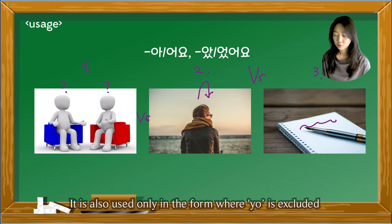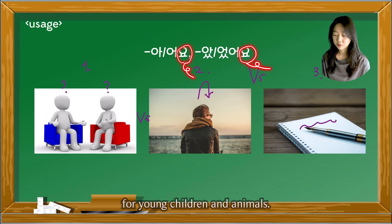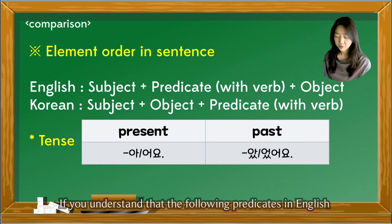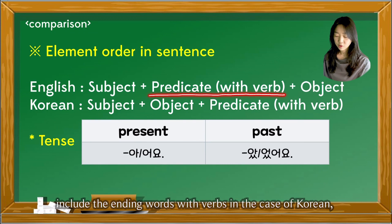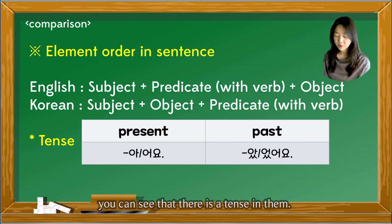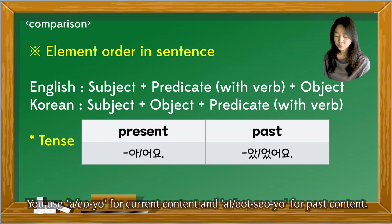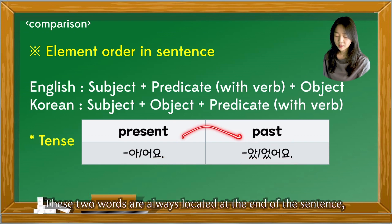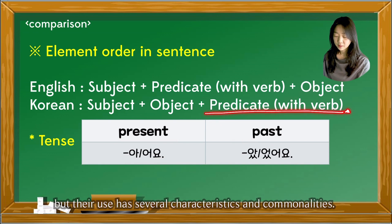It is also used in the form where 요 is excluded for young children and animals. If you understand that English predicates include ending words with verbs in Korean — because English and Korean differ in word order — you can see there is a tense in them. 아어요 is used for current content and 았었어요 for past content. These two words are always located at the end of the sentence, but their use has several characteristics and commonalities.